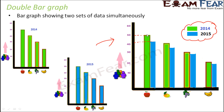That is because everywhere the 2014 bars are higher than the 2015 bars. Double bar graphs help you compare two different sets of data. In this case, looking at the double bar graph you can very easily compare the liking or disliking of fruits in 2014 with that in 2015.